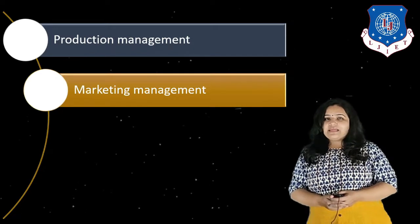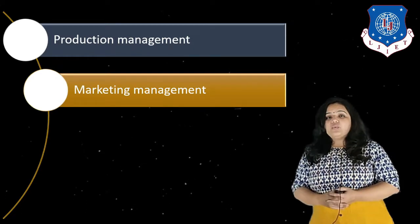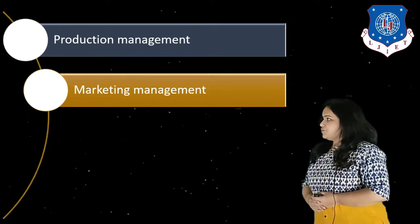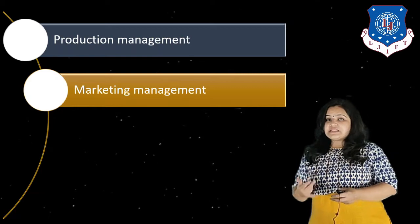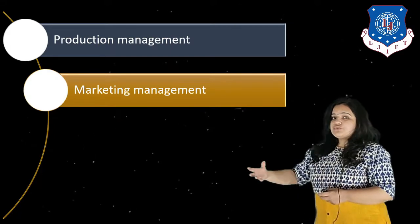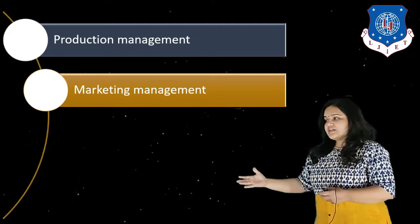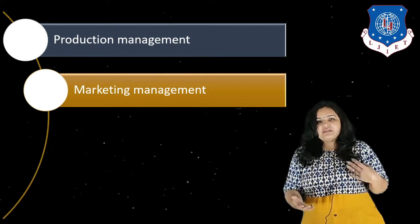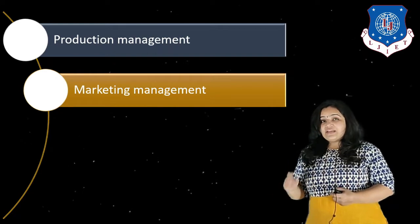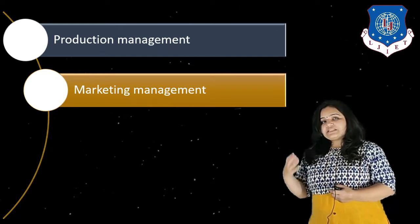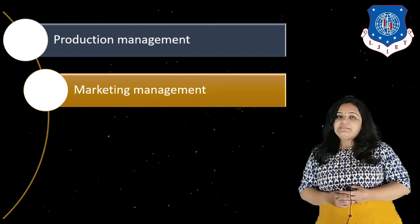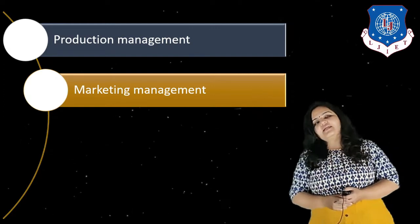The second area that needs to be managed is marketing management, which covers the marketing of any department. This includes different things like advertisement for the product, building a new product in such a way that it is useful to the customer, reaching the customer in the best possible manner — whether through TV ads, print media, or radio — finding the best way to reach customers, making sure the best advertisements are made, and that sales are properly managed.